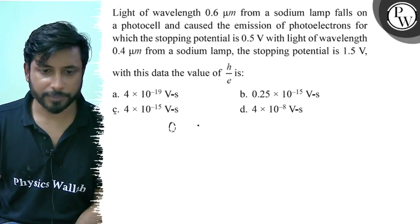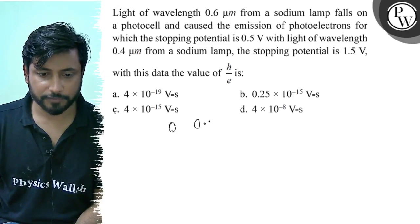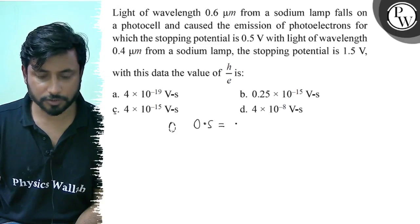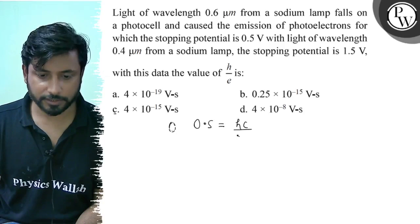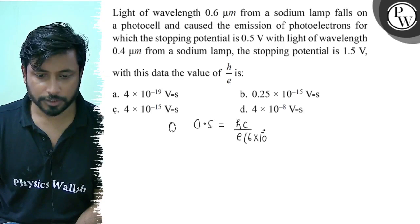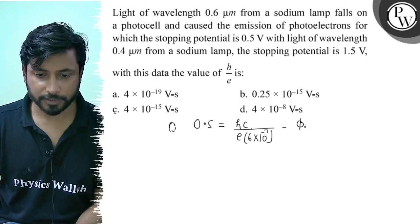Actually, what is the value? In the first case, 0.5 electron volt equals to 0.5 volt stopping potential equals to hc by e lambda. Lambda is 0.6 micrometer, 0.6 into 10 to the power minus 6 minus phi by e.